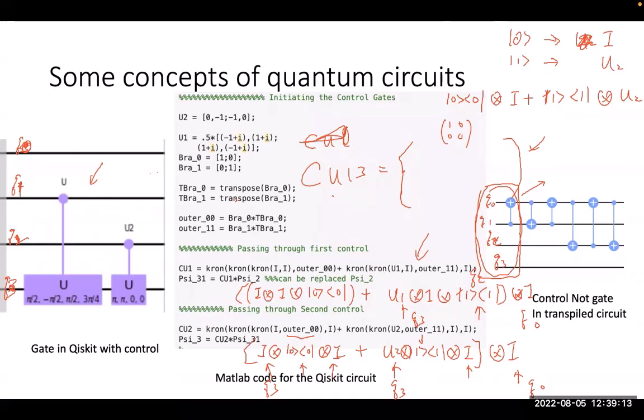I'm going to write down for zero, it is I tensor product of outer zero, zero. But which one is the controlling qubit? Controlling qubit is Q one. So which one should go first? This is little endian. From Q3? Yeah. Let's start from Q3. So what do you do? I tensor product I, tensor product zero, zero, tensor product I.